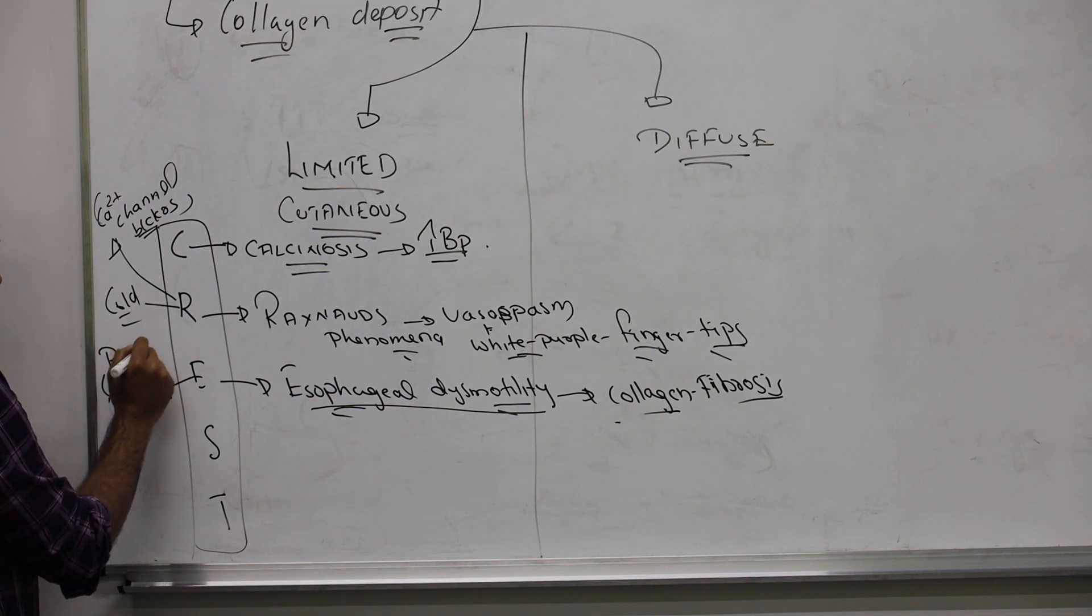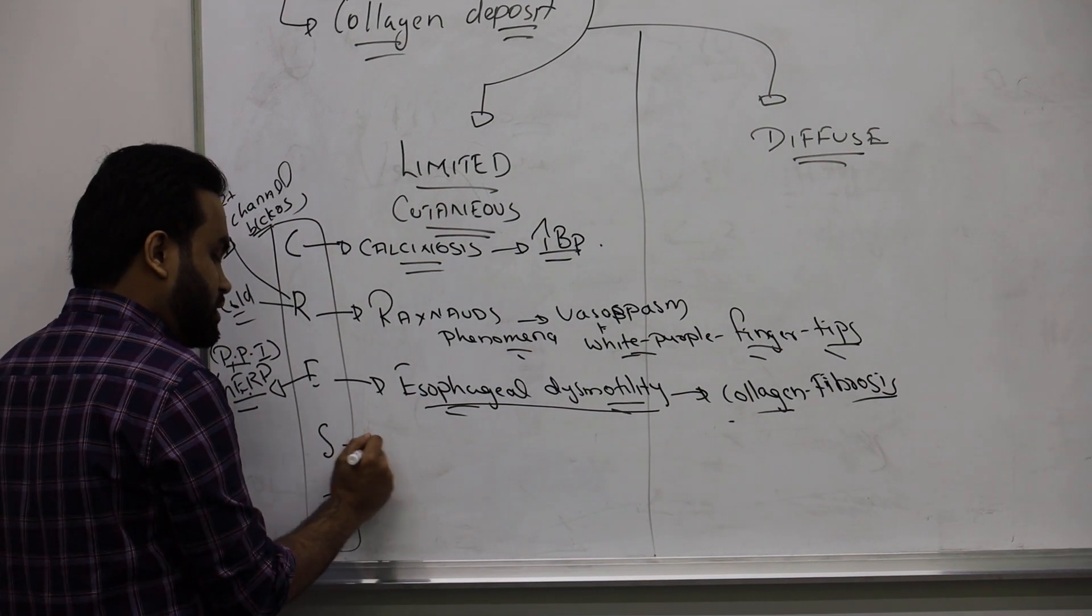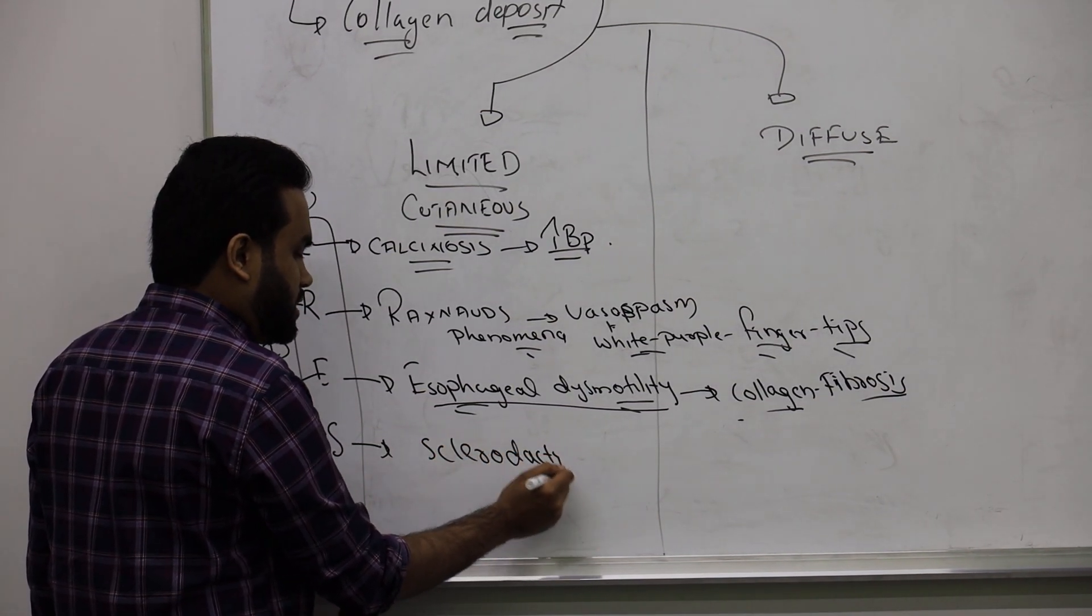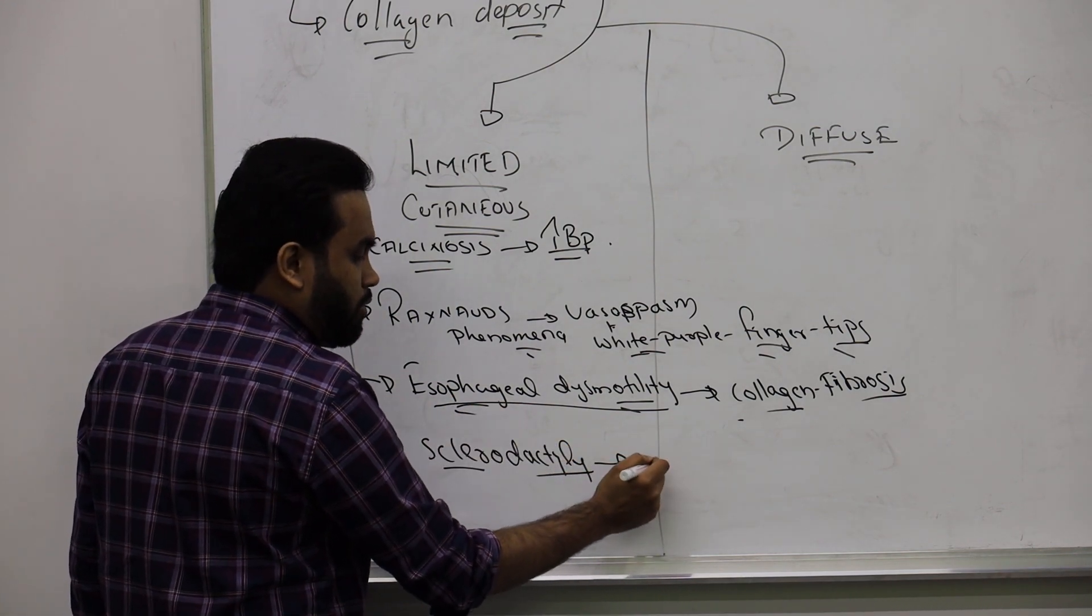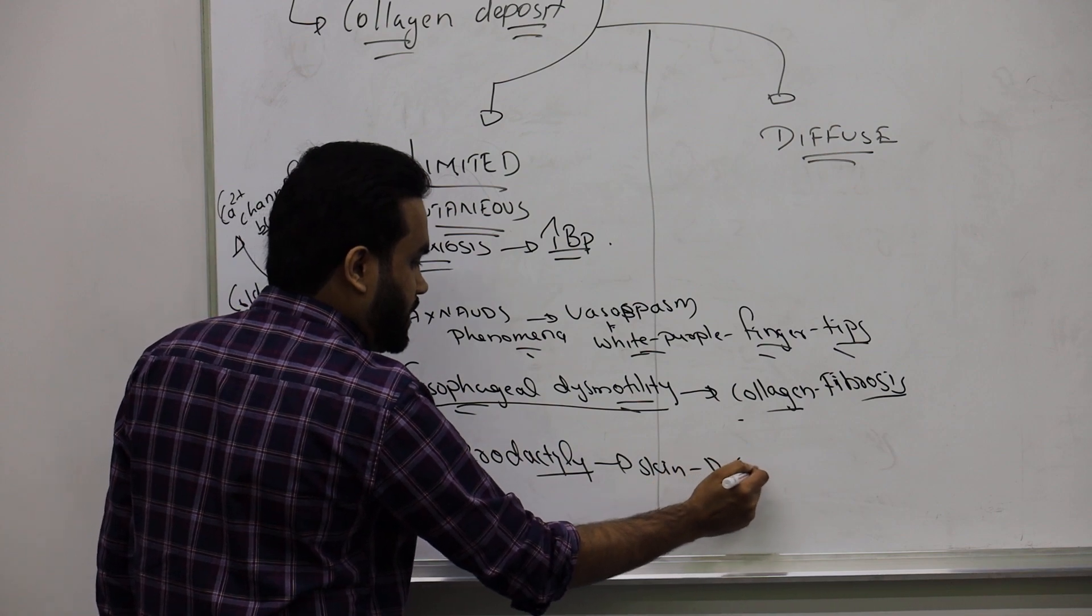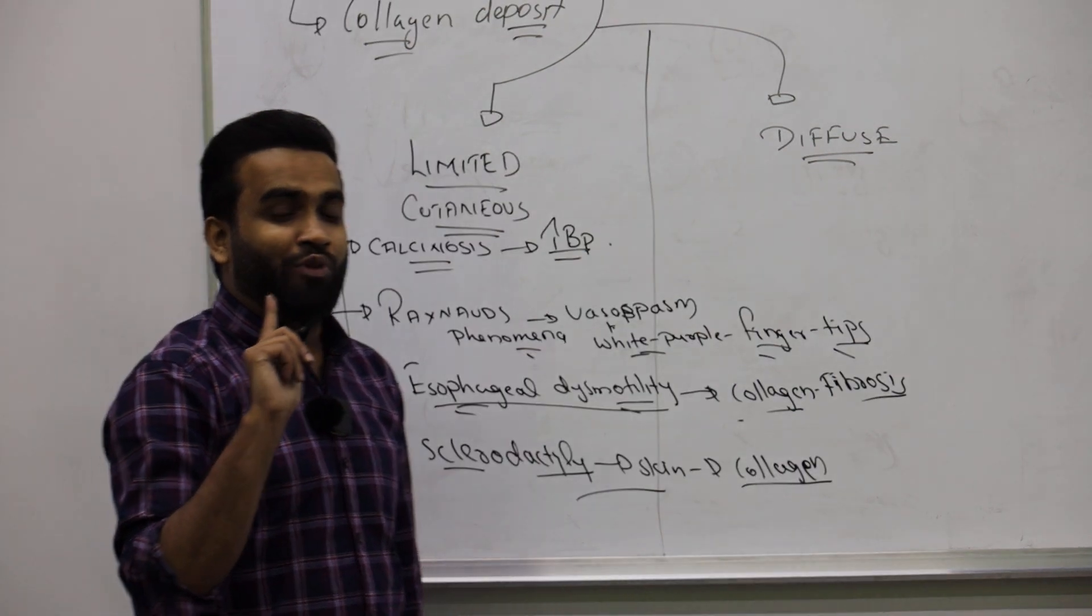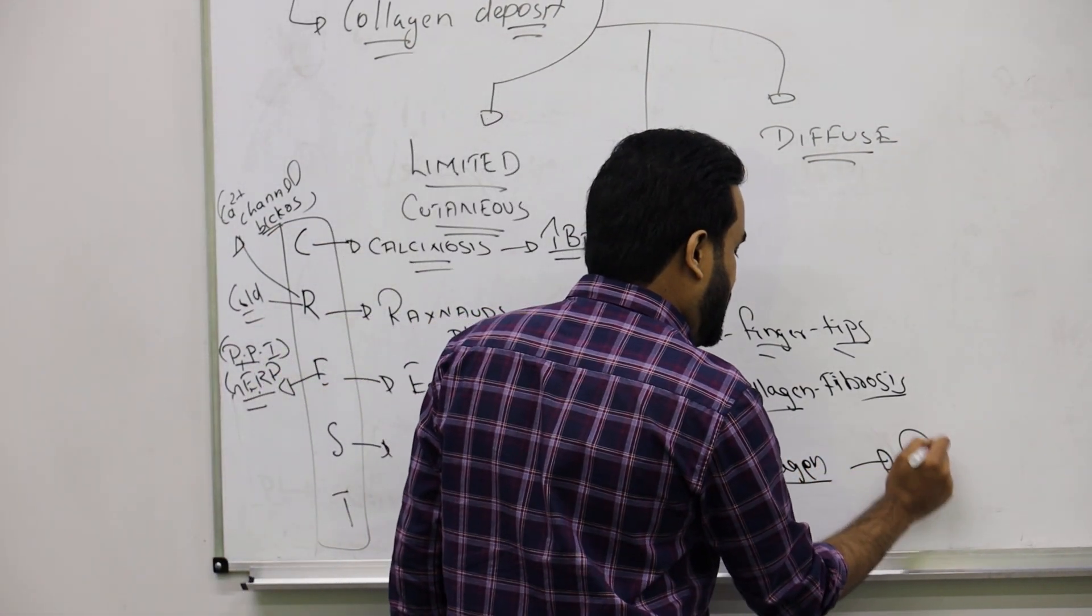If someone has this condition, treat them with high dose PPI proton pump inhibitor. S is for sclerodactyly - dacto means finger, sclero means hard, and the skin is replaced by collagen. Here we give a specific drug, penicillamine, like we use for Wilson disease.